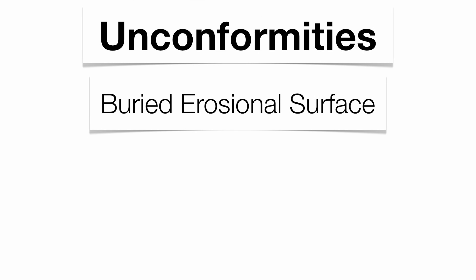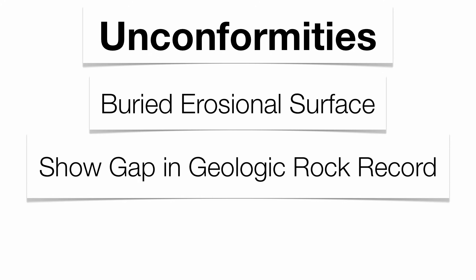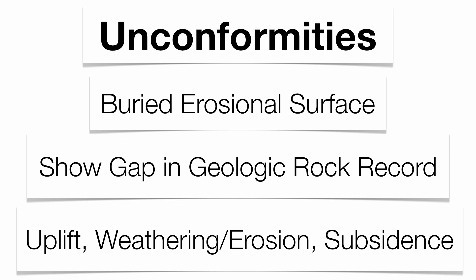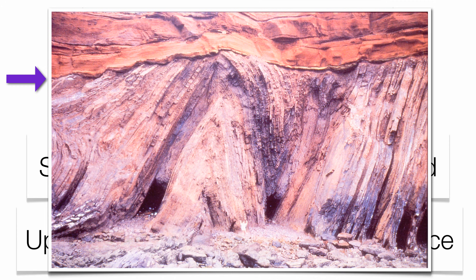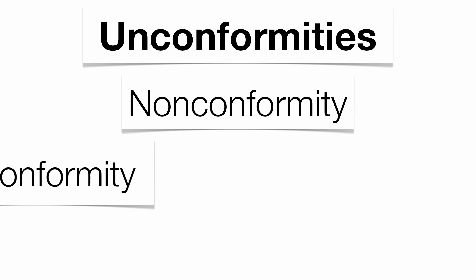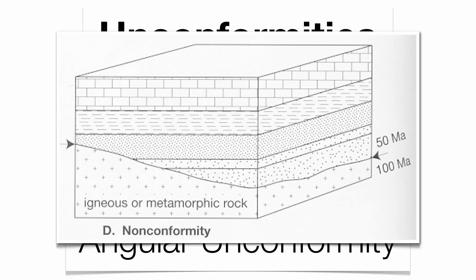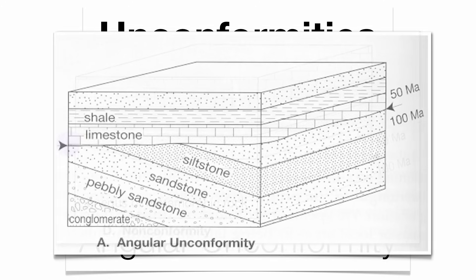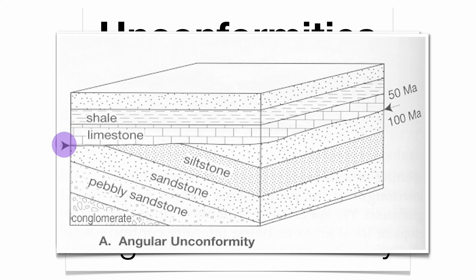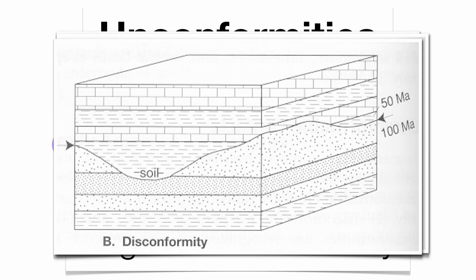You can also get unconformities, which are buried erosional surfaces that show a gap in the geologic rock record — rock is actually missing. It's a three-step process: uplift, weathering and erosion, then subsidence. Uplift forces rock out of the water; subsidence drops it below water level for deposition to resume. Here's an unconformity between horizontal rock on top and folded rock below. Regents diagrams also show nonconformities, disconformities, and angular unconformities — make sure you can identify where unconformities lie within your sequences.